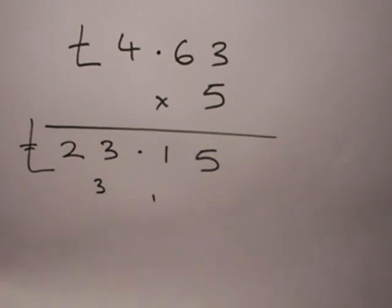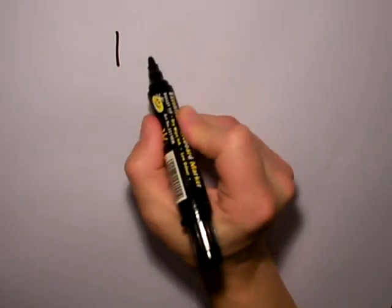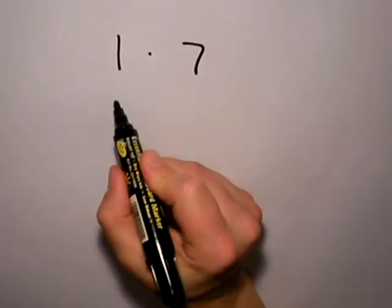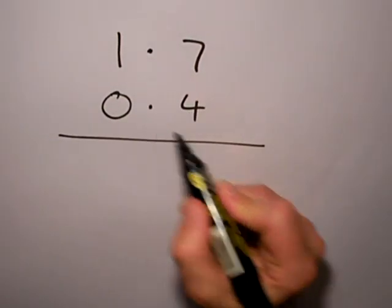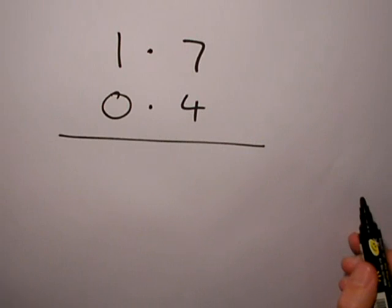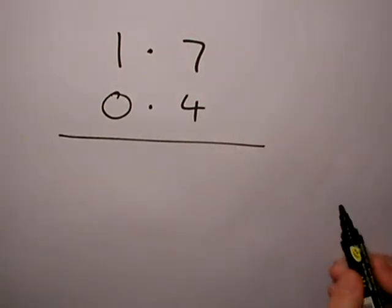I'm going to do another example of short multiplication. I'm going to multiply two decimal numbers this time: 1.7 and 0.4. Now, I've got two numbers with decimal points in, so I'll deal with those later, but first I go through my multiplication.